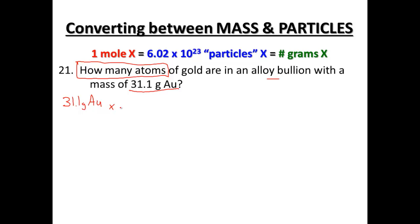We have 31.1 grams of gold. Our first conversion factor: we can go from grams to moles. To go from grams to moles, using your periodic table, one mole of gold equals 196.97 grams of gold — that comes from the PT. So now we're in moles of gold.